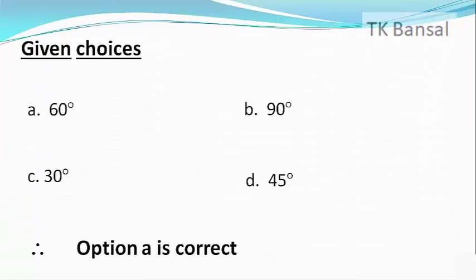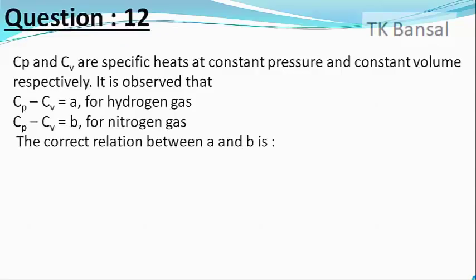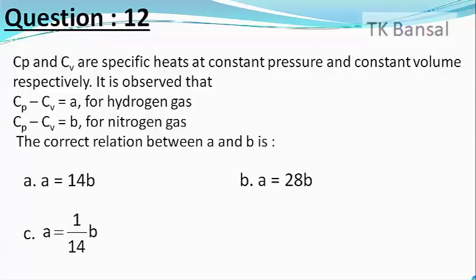Our next question is: C_p and C_v are the specific heats at constant pressure and at constant volume respectively. It is observed that C_p − C_v = A for hydrogen gas and C_p − C_v = B for nitrogen gas. The correct relation between A and B is — choices are A = 14B, A = 28B, A = B/14, and A = B.